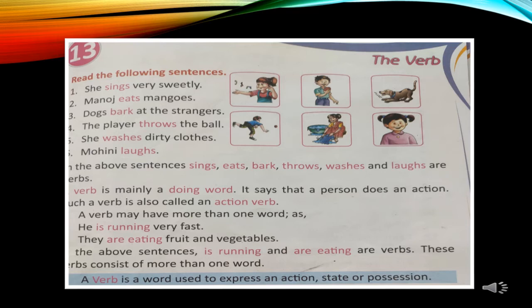A verb may have more than one word, as in: 'He is running very fast,' and 'They are eating fruits and vegetables.' In the above sentences, 'is running' and 'are eating' are verbs. These verbs consist of more than one word. So children, it is not compulsory that a single word is used as a verb — it may include words like 'is' or 'are' with it.